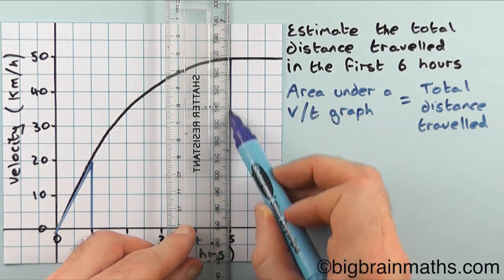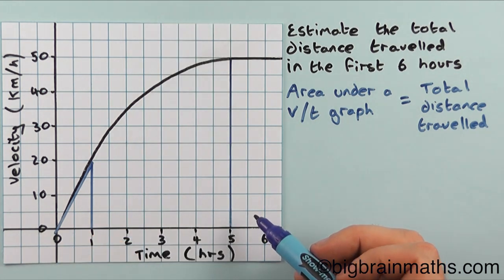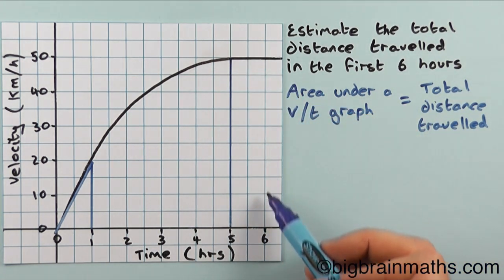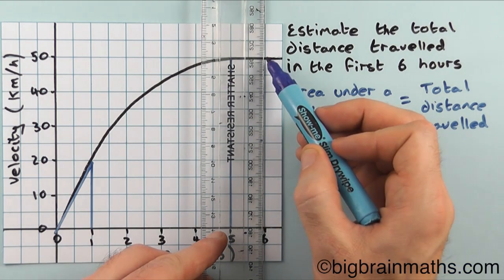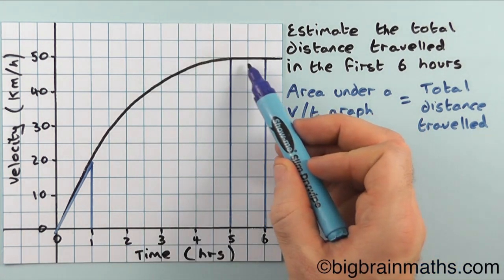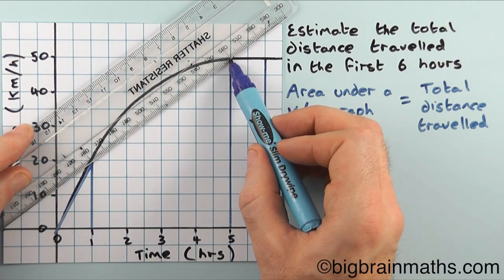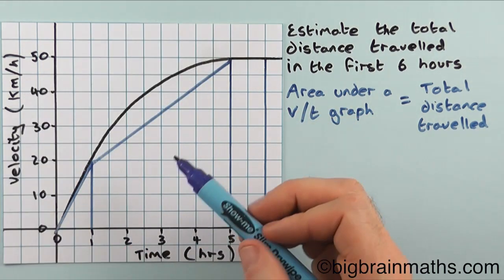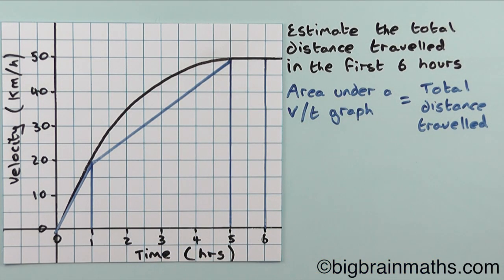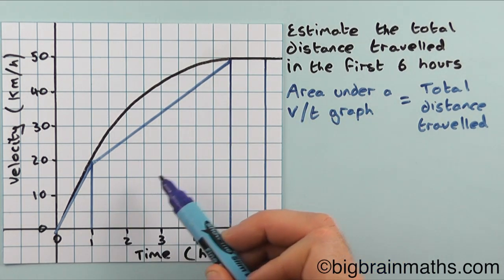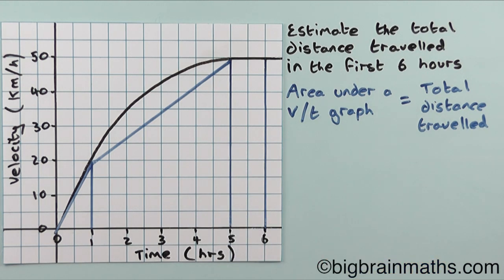I take my ruler and divide this part of the graph into a rectangle. We only want to estimate the distance travelled in the first six hours, so I only need to go to the six-hour point. I break up the last part into a rectangle because it was a straight line, then I join the top of my triangle to this point and draw a diagonal line between them, breaking up the remaining part into a trapezium. Looking at these three shapes, there's a really big gap between the curve and the trapezium, so this estimate will not be very good.